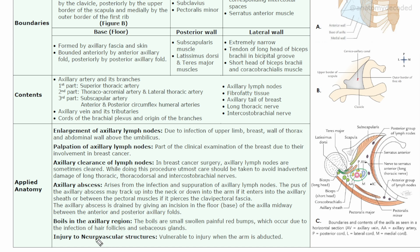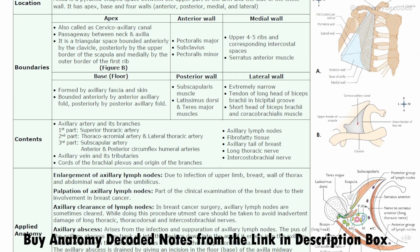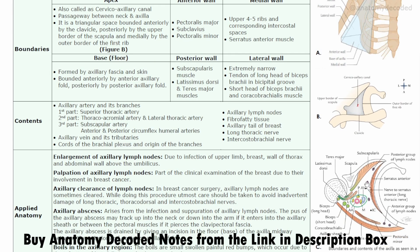Regarding injury to neurovascular structures: when the arm is abducted, the neurovascular structures in the axilla are vulnerable to injury. In the normal anatomical position the arm is adducted, but when the arm is abducted, these structures can get injured.